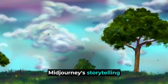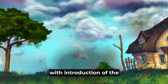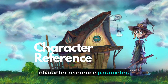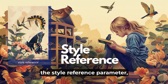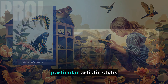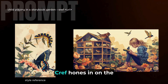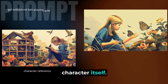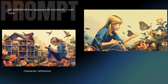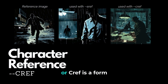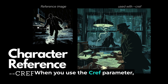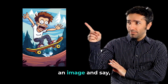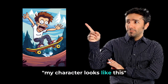Midjourney's storytelling capabilities took a leap forward with the introduction of the Character Reference Parameter. This tool functions similarly to the Style Reference Parameter. While SREF helps capture a particular artistic style, CREF hones in on the character itself. Character Reference, or CREF, is a form of image prompt, but it focuses on the character's physical traits. When you use the CREF parameter, you point Midjourney to an image and say: my character looks like this.